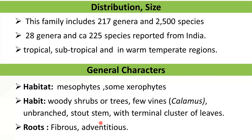About the distribution and size of this family: it includes 217 genera and approximately 2,500 species, out of which 28 genera and approximately 225 species have been reported from India. The members of this family are found in the tropical, subtropical regions of the world and also in warm temperate regions.